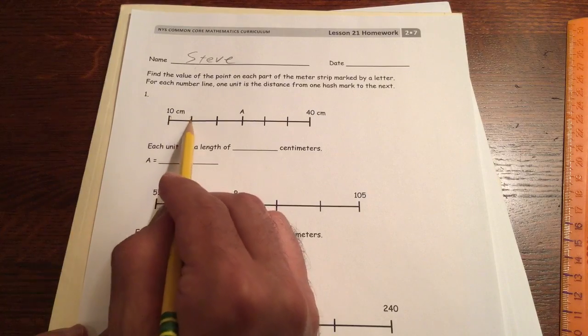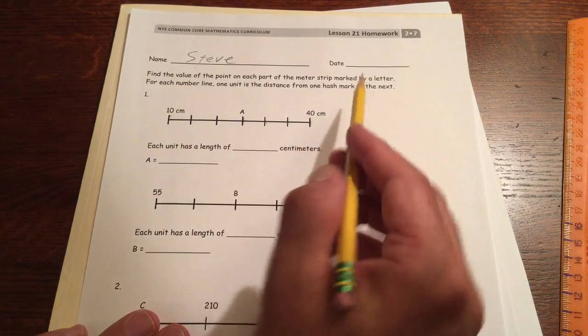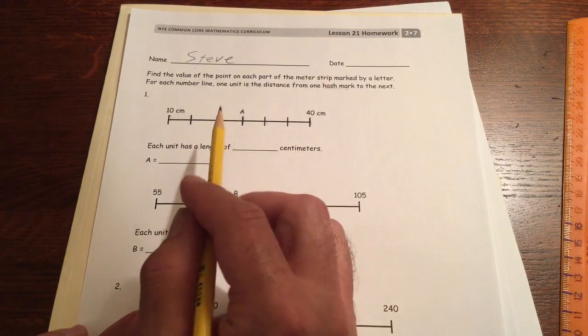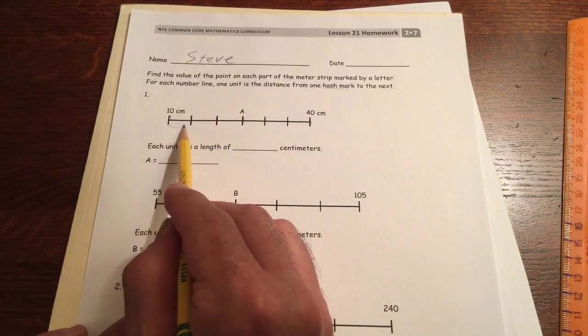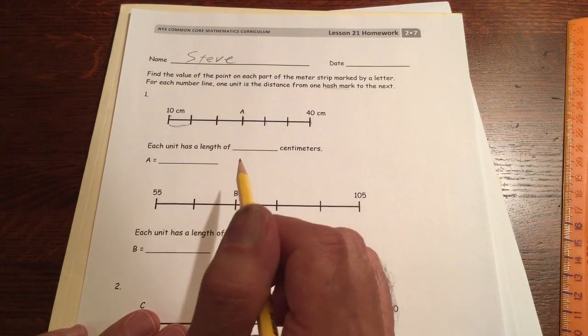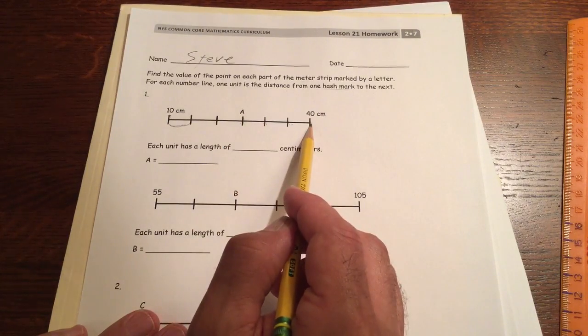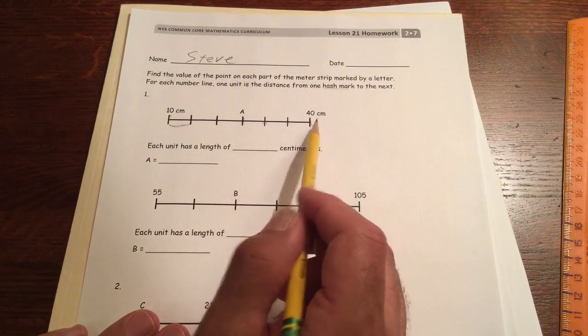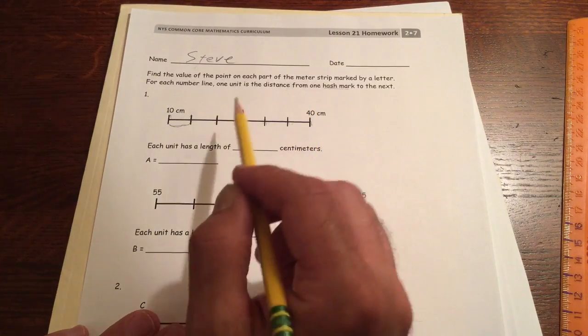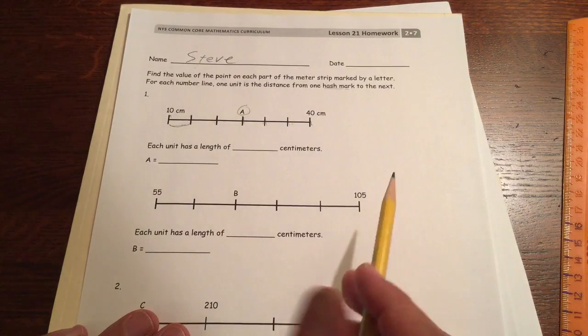These are hash marks. Those are hash marks. This is a unit. That's how far apart they are. What we have to do is figure how far apart are these units. What are we skip counting? We're skip counting. What are we skip counting by? Once we figure that out, we can figure out what the letter is.